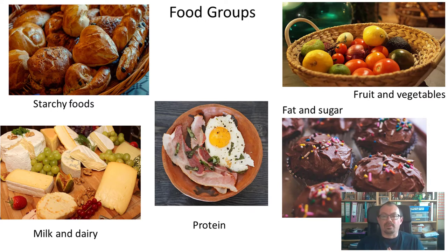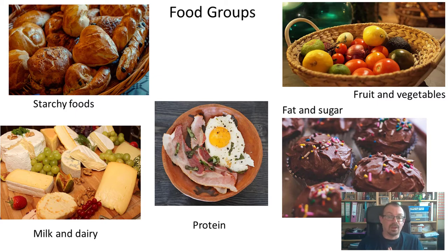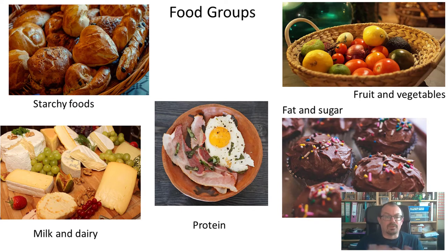Fruit and vegetables provide our body with vitamins and minerals that help our body stay healthy. For example, things like oranges and lemons contain a very useful chemical called vitamin C, which can help prevent diseases like scurvy. Foods that come under milk and dairy include milk, cheese, and yogurt. These contain calcium, which is good for our teeth and for our bones.